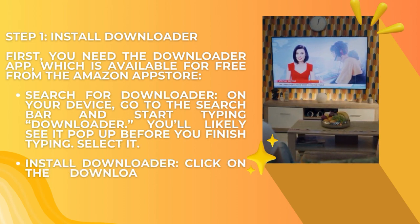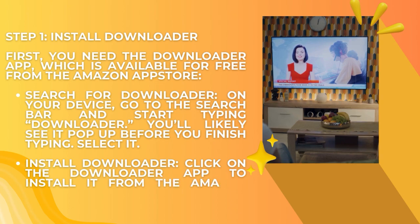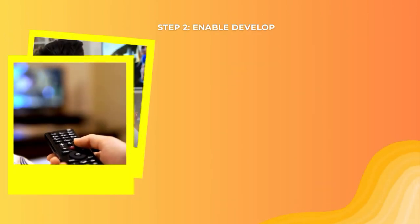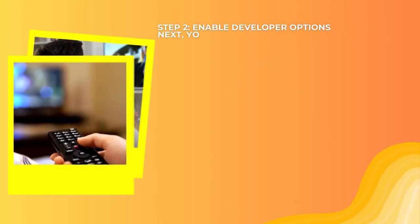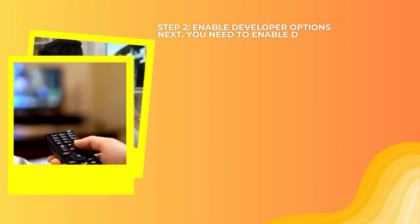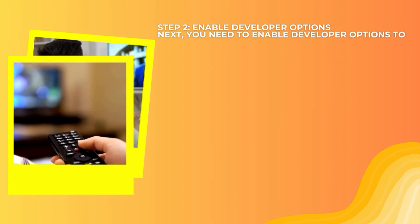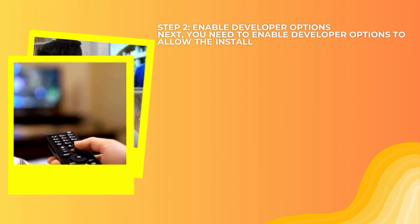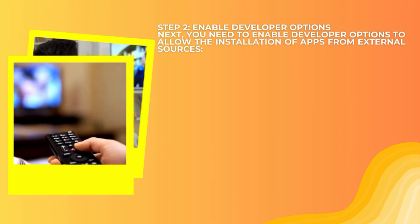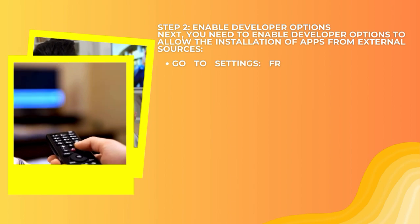Click on the Downloader app to install it from the Amazon App Store. Step 2: Enable Developer Options. Next you need to enable developer options to allow the installation of apps from external sources. Go to Settings on the home screen.